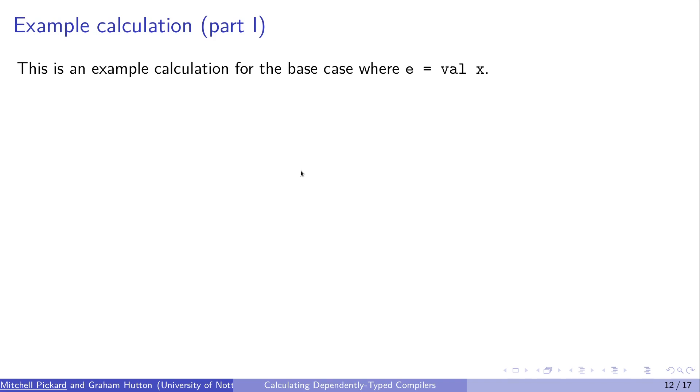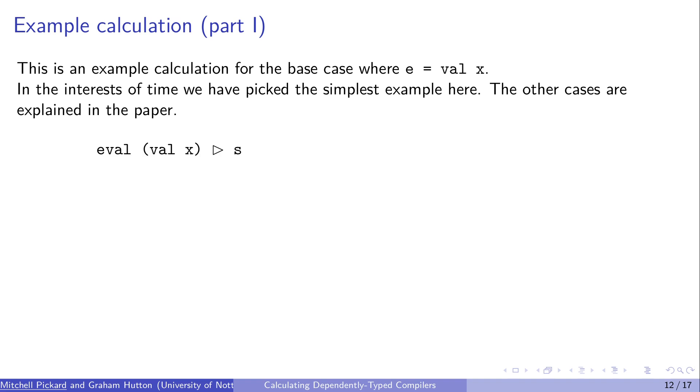So I'll go through an example calculation now. This is going to be the simplest example possible in the interest of time. It's just going to be the base case for E equals val x. The other cases are explained in a lot more detail in the paper. As I said before, we start from the right hand side, so in this case it's eval of val x on top of some stack S, and we can simply apply the definition of eval from before.